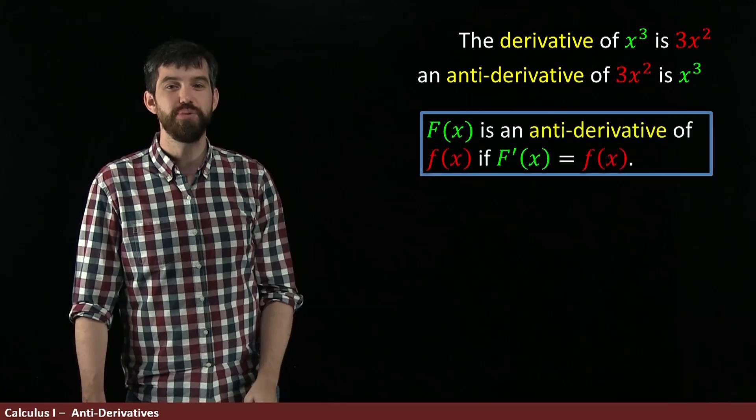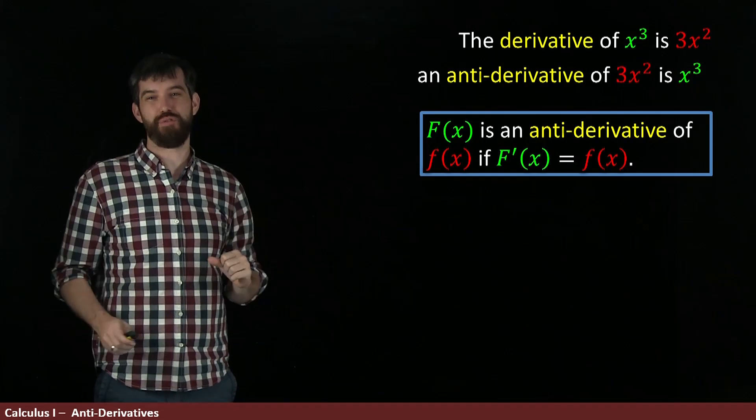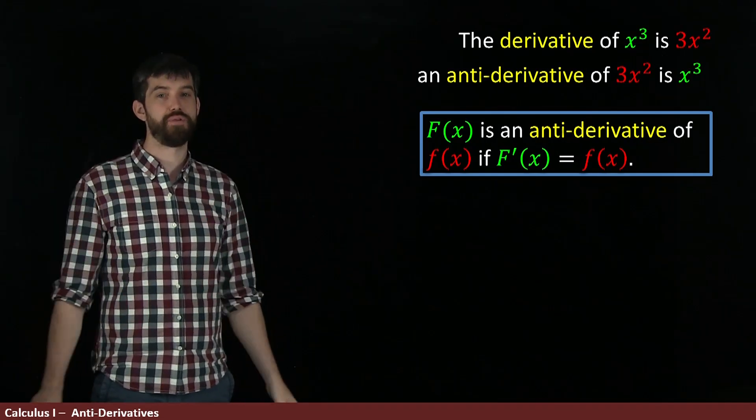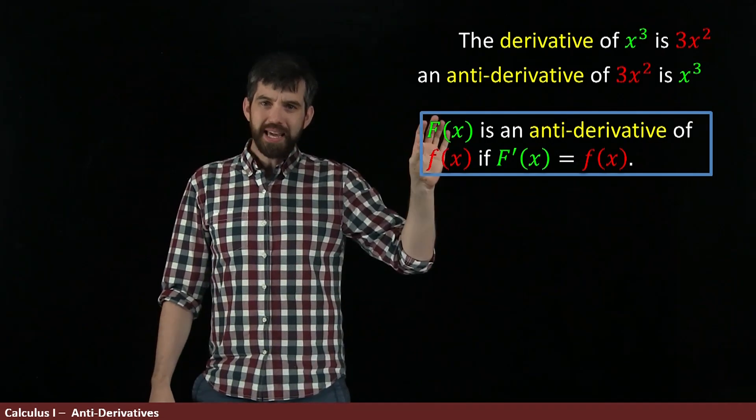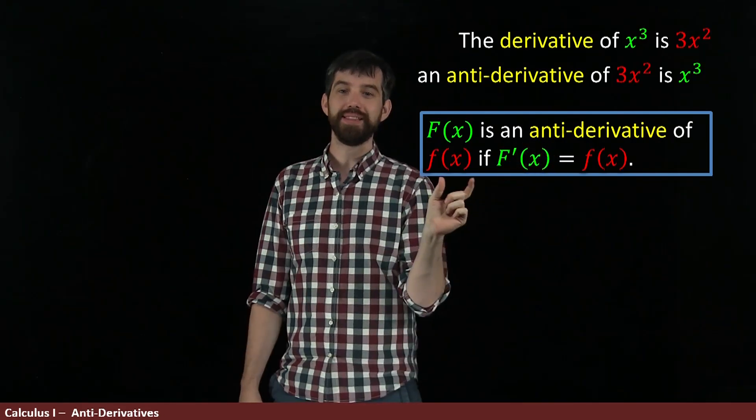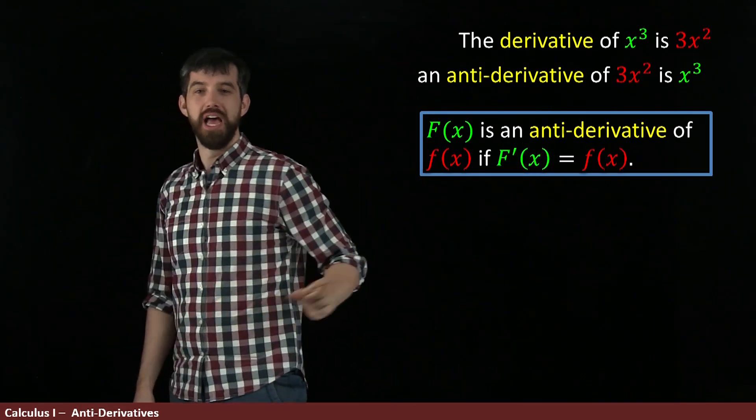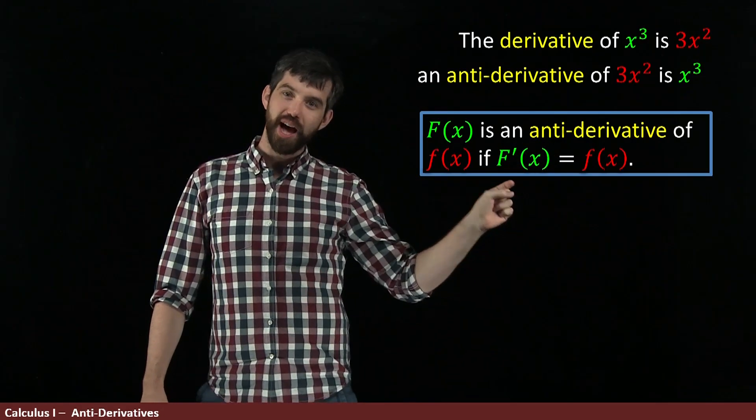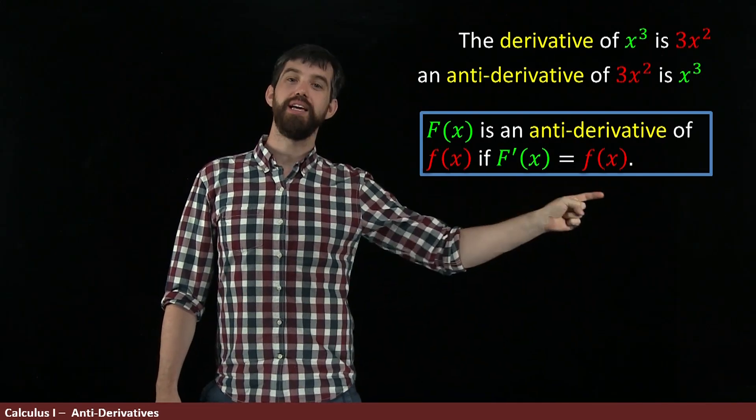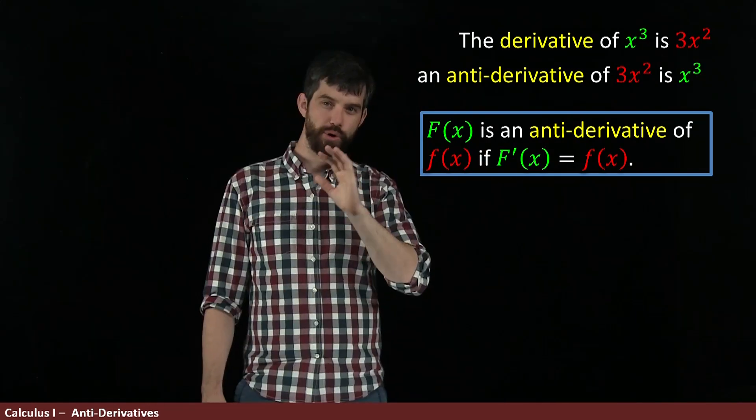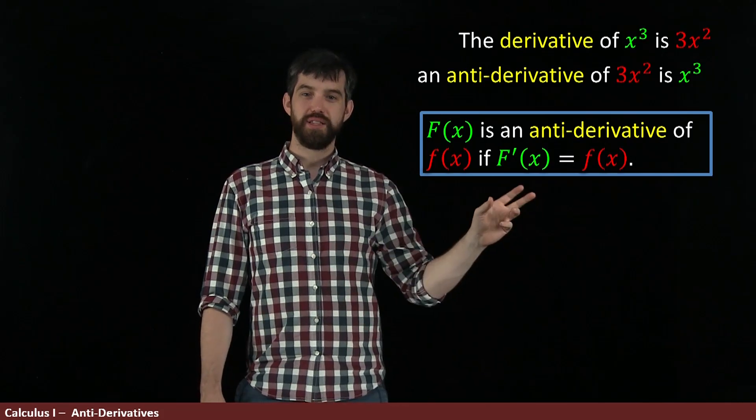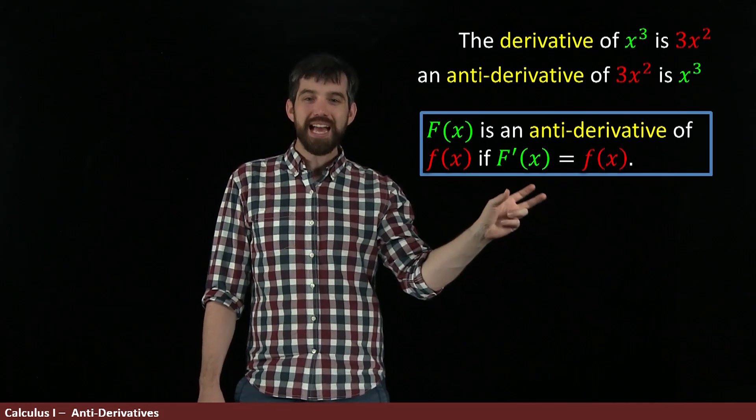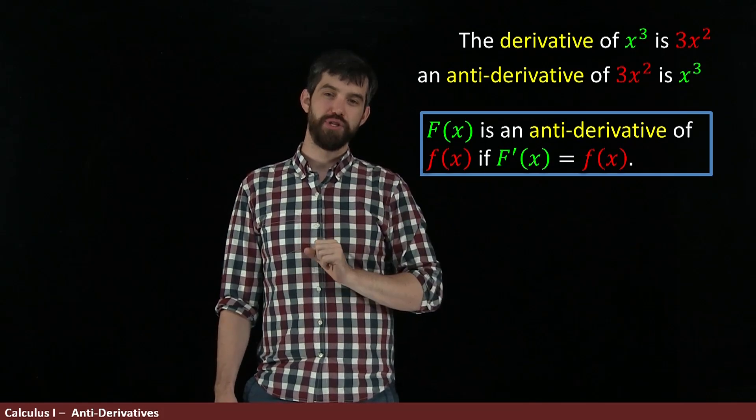So here's our general definition. We're going to say that big F, we always use big Fs for antiderivatives, that big F is an antiderivative of little f if it has the property that the derivative of the antiderivative is just the function. Or to repeat, we're saying the derivative of this antiderivative is the original function.